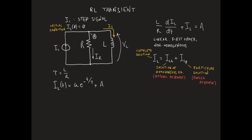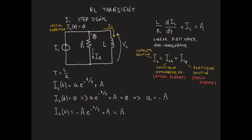The complete solution has to comply with the initial condition, saying that the current at T equals zero is equal to zero. So IL(0) = 0 means A_const times e^(0) plus A equal to zero, which eventually gives A_const equal to minus A. So the final form of IL of T will be minus A times e^(-t/τ) plus A, which gives A times (1 minus e^(-t/τ)).